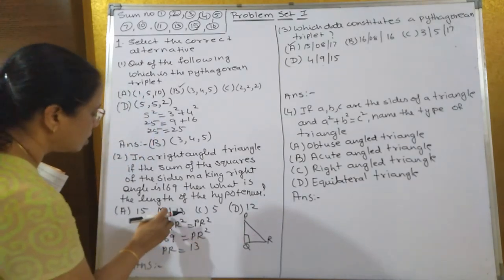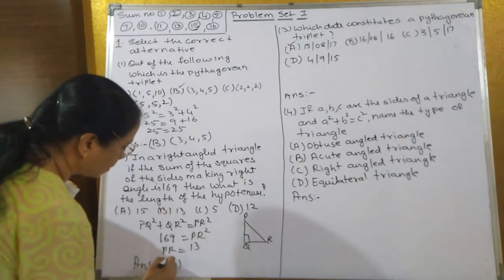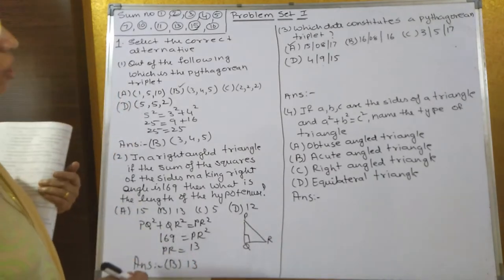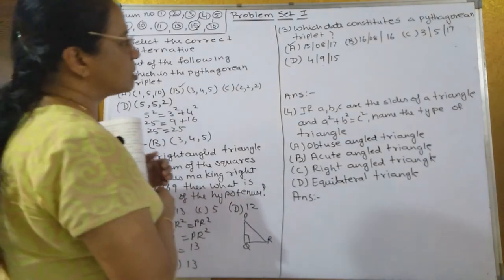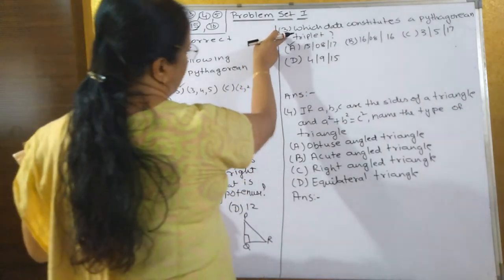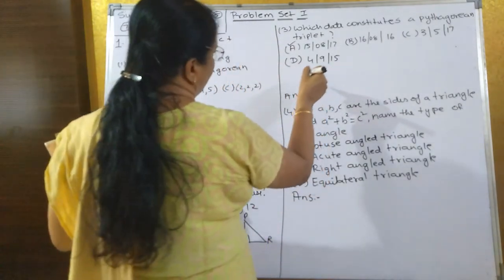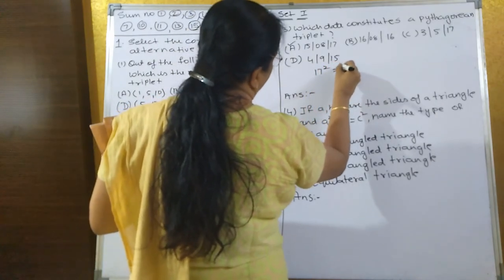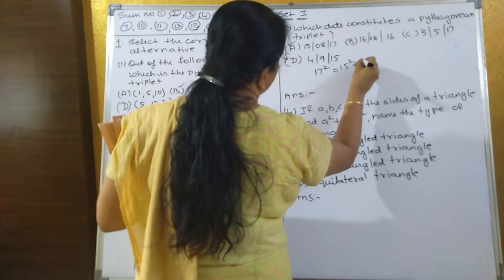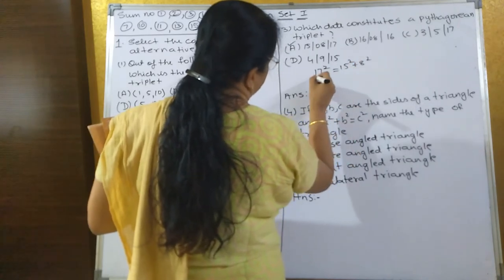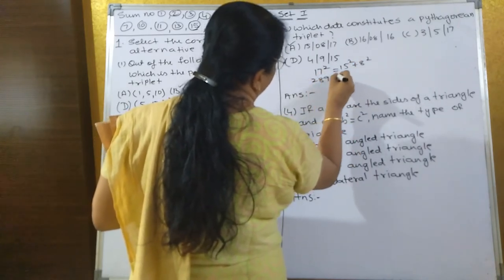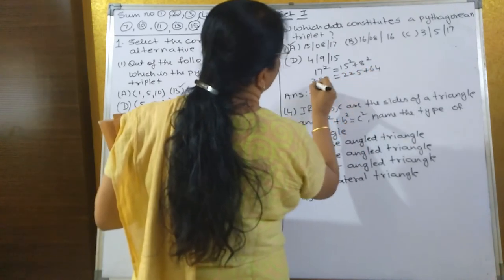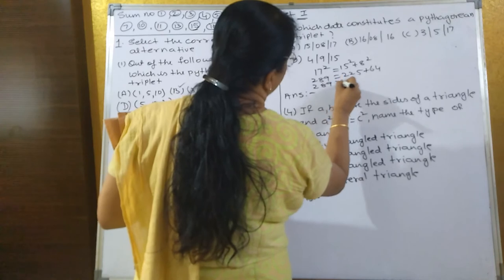So the correct option is B, that is 13. Now the next one - again you have to find out the Pythagorean triplet. Some options are given. The correct one is A. If you take 17², it should be equal to 15² + 8². 17² is 289, and 15² + 8² is 225 + 64, so 289 equals 289.